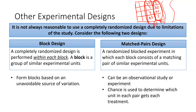There are two ways to have a matched pairs design. First, two separate individuals are matched on numerous characteristics — same height, weight, sex, severity of disease, and so on. One is randomly selected to receive the treatment; the other is assigned to control. Identical twin studies are a classic example: one twin gets a treatment, one doesn't. The data then becomes the differences within each pair, not a comparison of group means.